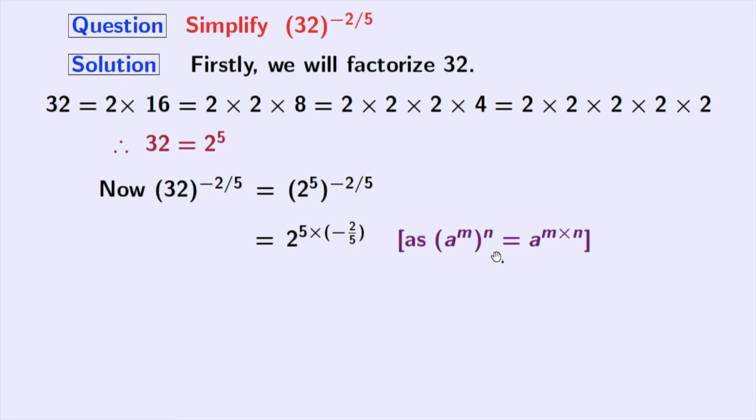As we know that a power m whole power n is equal to a power m times n. Here a is 2, m is 5 and n is minus 2 by 5. Now, simplifying the power we get 2 power minus 2 and simplifying this we get 1 by 2 square.